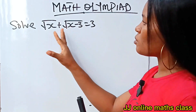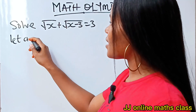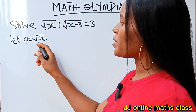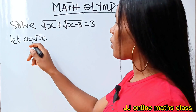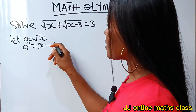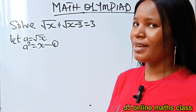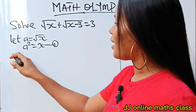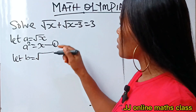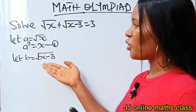So we write: let a = √x. Now if we square both sides of this equation, we get a² = x. Let's call this equation one. Similarly, let b = √(x − 3).